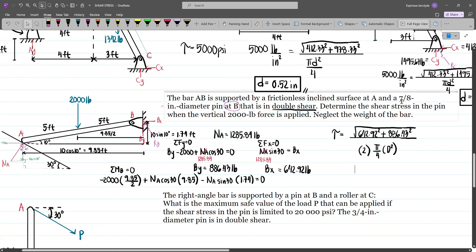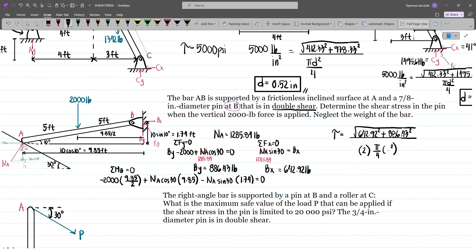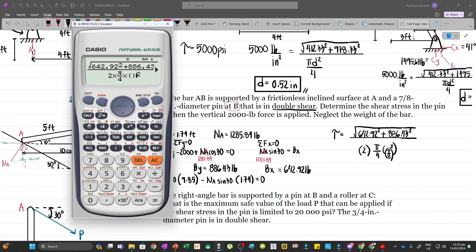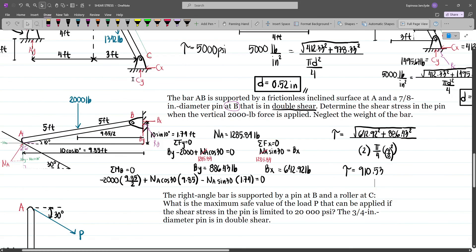Now our diameter is 7 over 8. So let's change this one into 7 over 8. And so our shear stress will be 910.53 pounds per square inch or PSI.